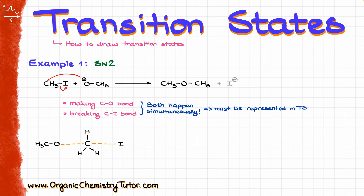When it comes to those dashed lines, I want to reiterate that when we are using the dashed line here, we are showing the process of breaking a bond and making a bond. Those dashed lines represent those partial bonds that are currently in the process of being either made or broken.